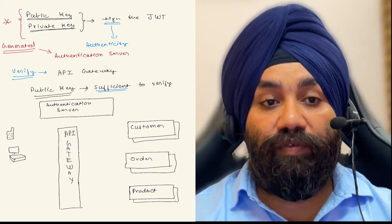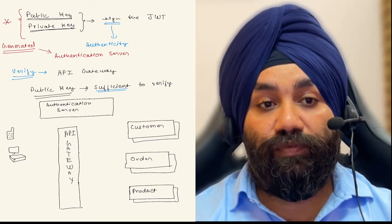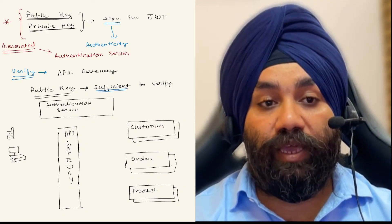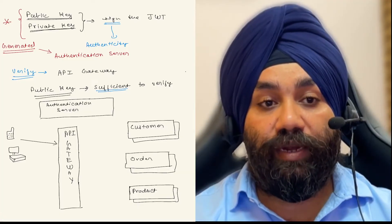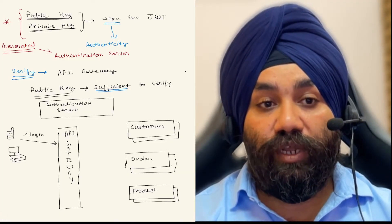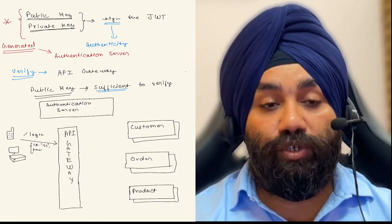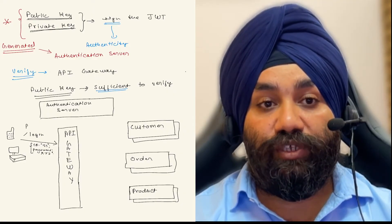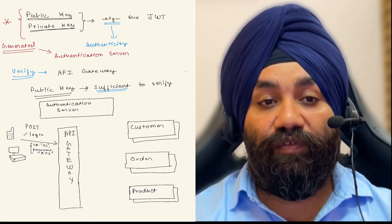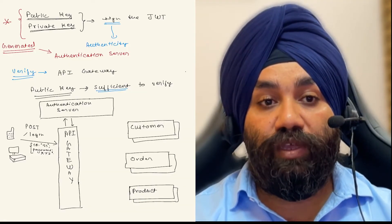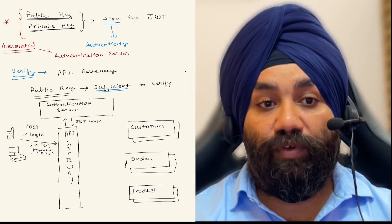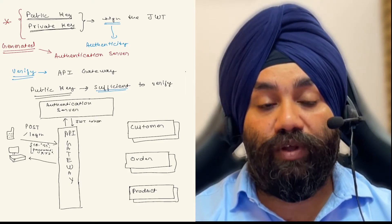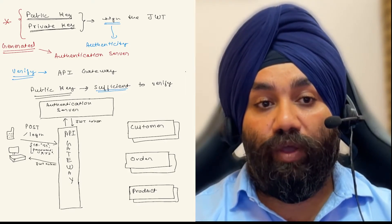First of all, when we try to log into the system, we call the login API, which is a public API, and we pass our ID and password to it. This request goes to the API gateway. This is a POST request, and then the API gateway sends this request to the authentication server, where after verifying the ID and password, it generates a JWT token for us and returns the JWT as a response for the login request.